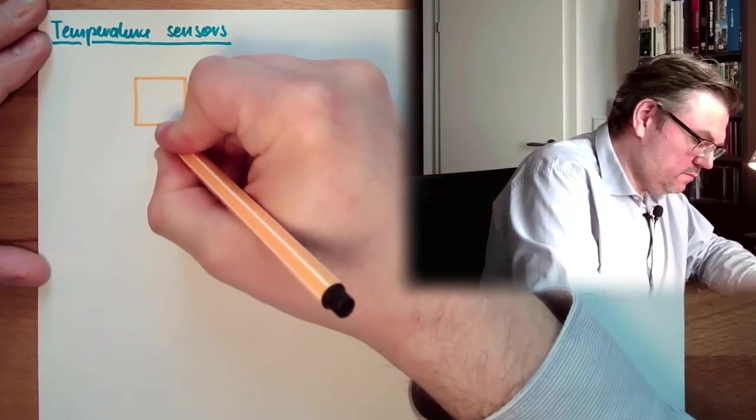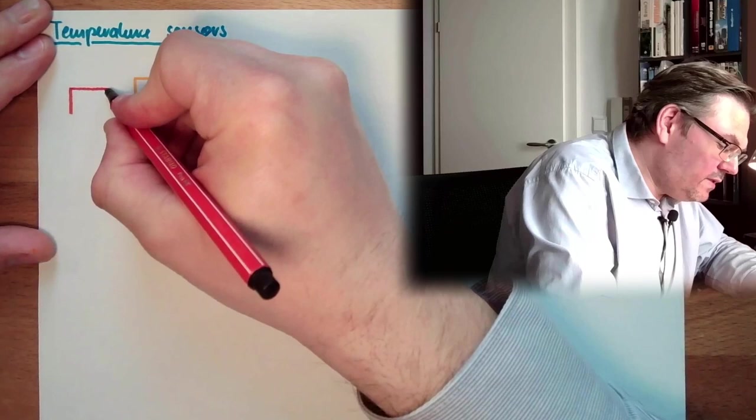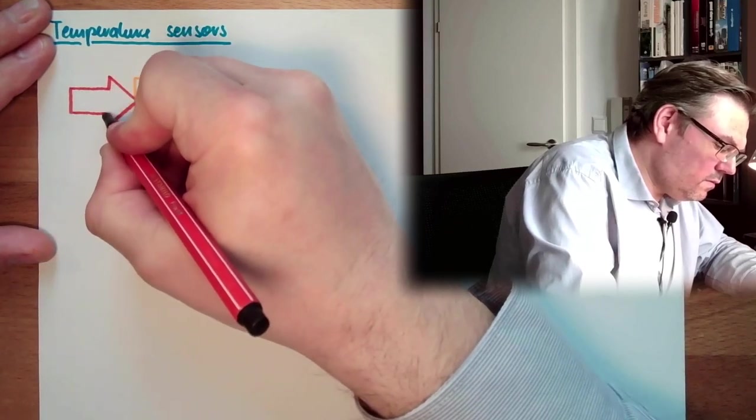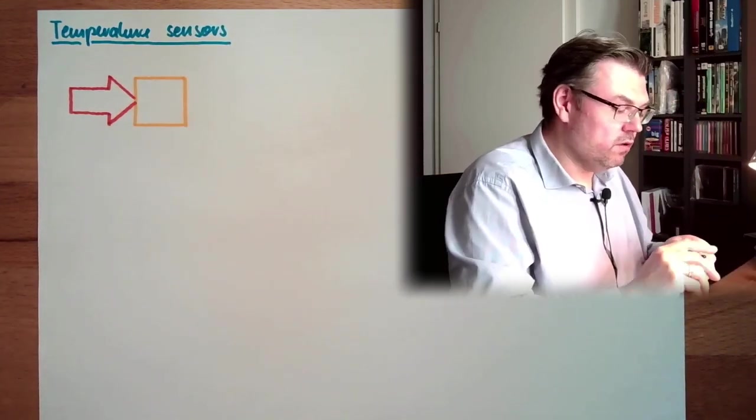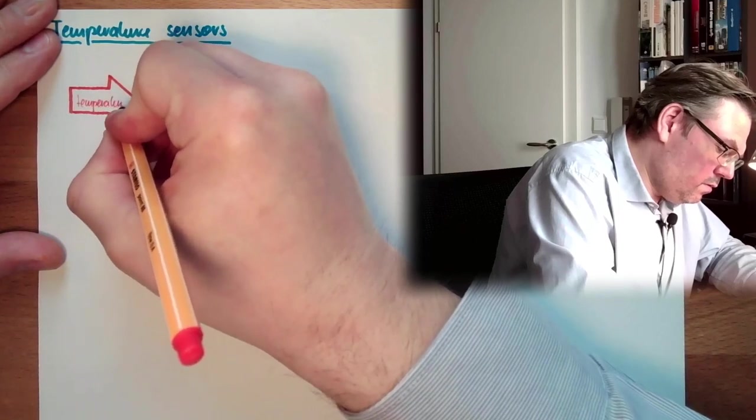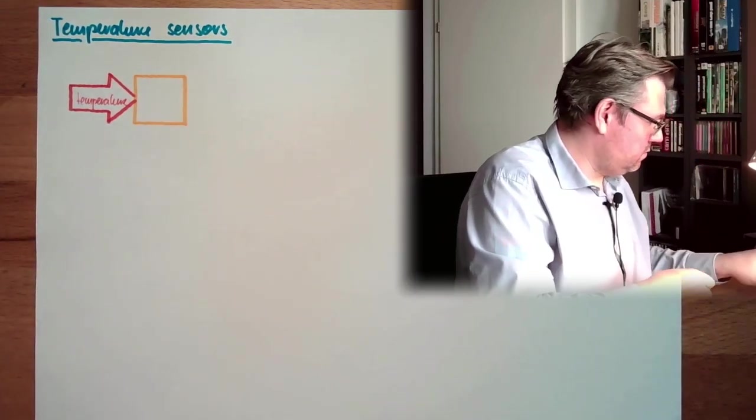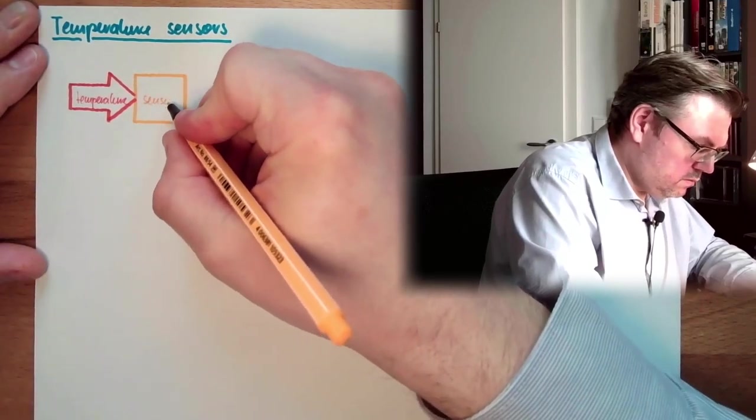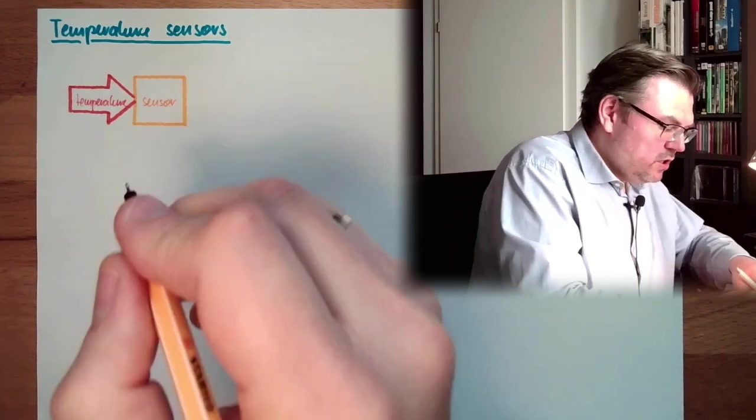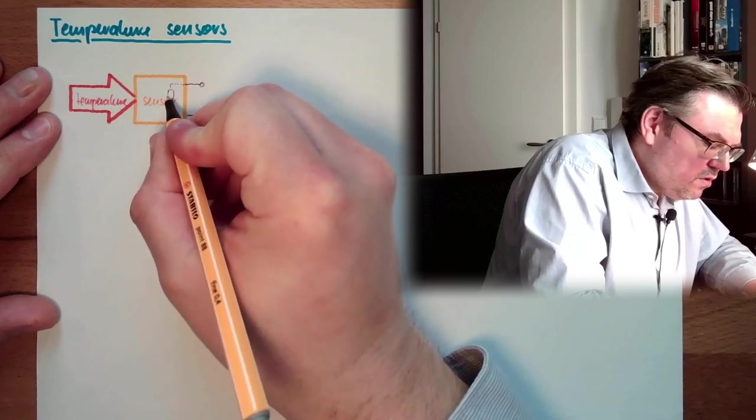It's working like any other sensor as well. So we have here this sensor, the temperature sensor. A physical quantity, which in this case is the temperature, is influencing the sensor. And the sensor is changing one parameter. So here we have the temperature, we have the sensor here, and this is measured somehow, this change.